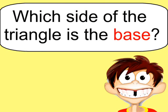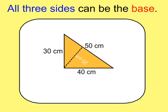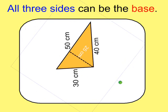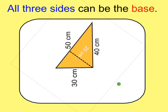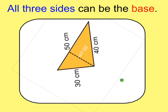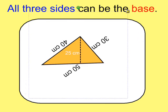Which side of the triangle is the base? Well, it really depends. In this example the base is 40 and the height is 30, but I could rotate the triangle and make the base 30 with a height of 40 — I'd still get the same area. I could even make the base 50 with a height of 25. So the base of a triangle really can be any of the three sides.